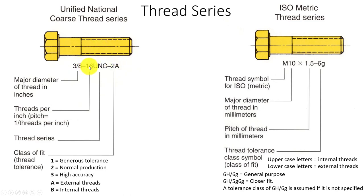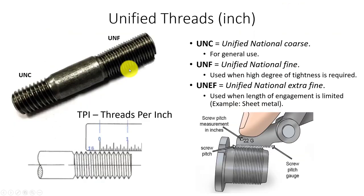So we're going to have 3/8ths-16, where 16 is the number of threads per inch. We lay a ruler up here for one inch and count the repeating teeth - there should be 16. That's going to be a UNC, a Unified National Coarse thread. If it were a fine thread, it would have a lot more teeth per inch than 16. Here's a UNF thread and here's a UNC thread - you can see there are far fewer threads on the coarse compared to the fine. This is where we're measuring TPI, threads per inch.